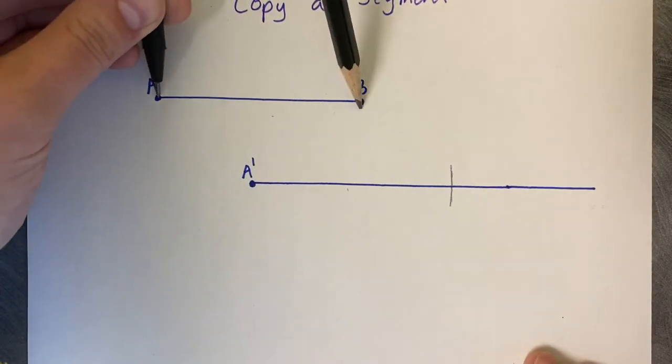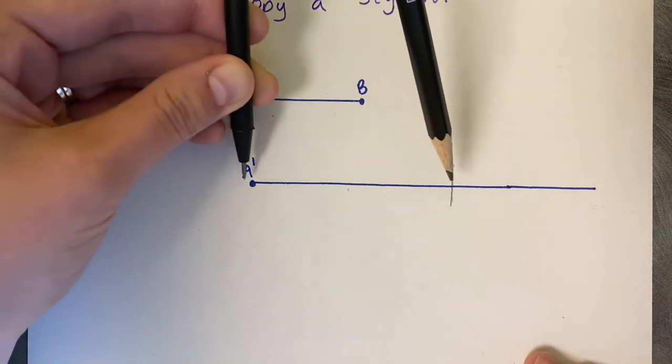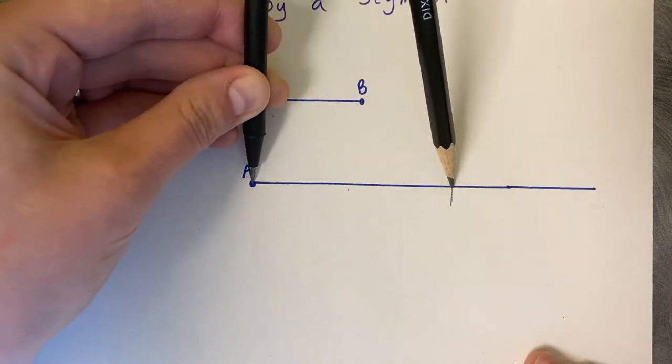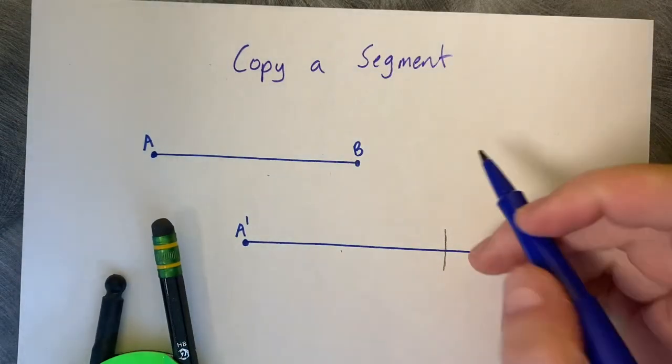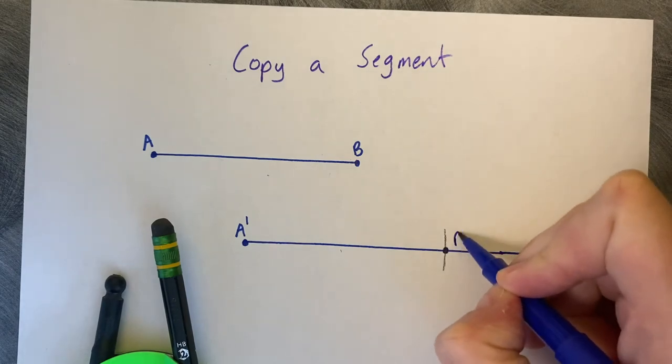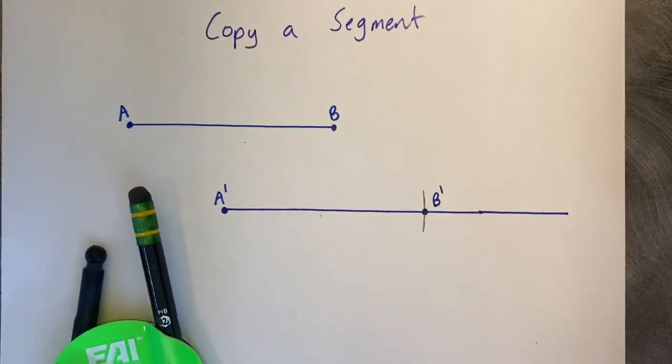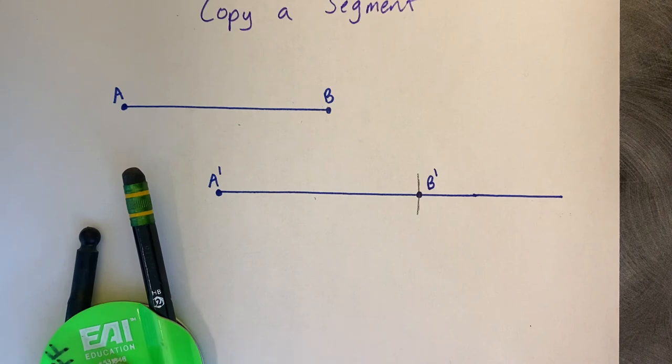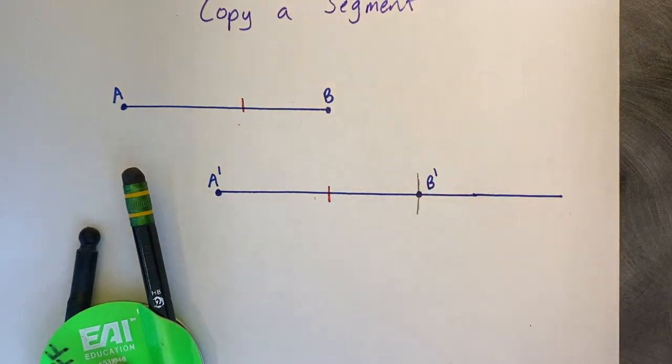Now this length from A to B matches from A to B'. I can label this B', the intersection that we've created. Now these two segments are congruent.